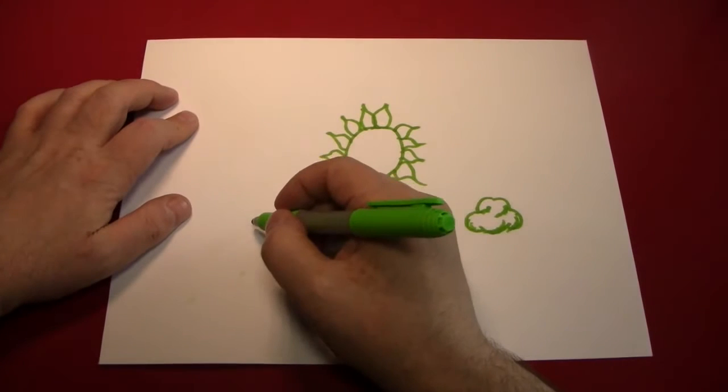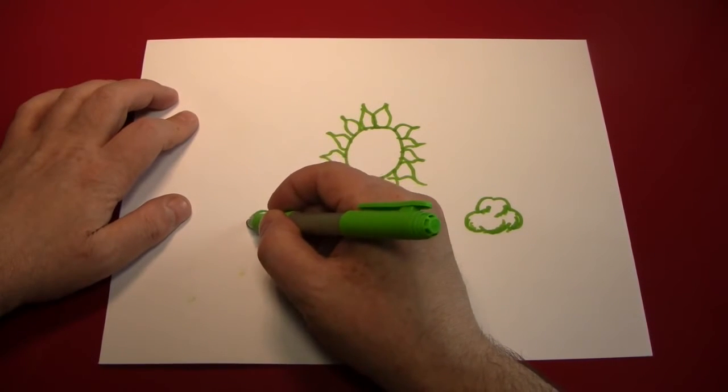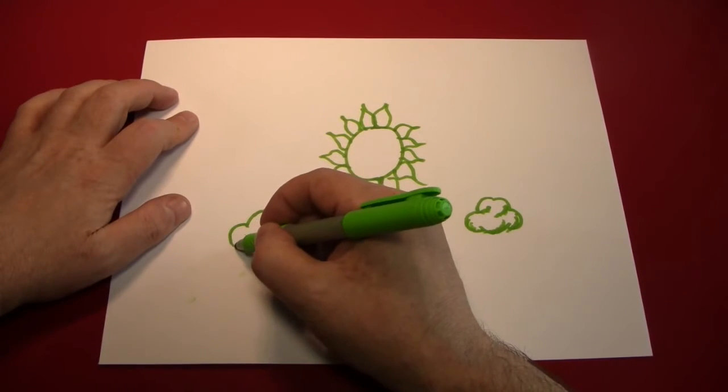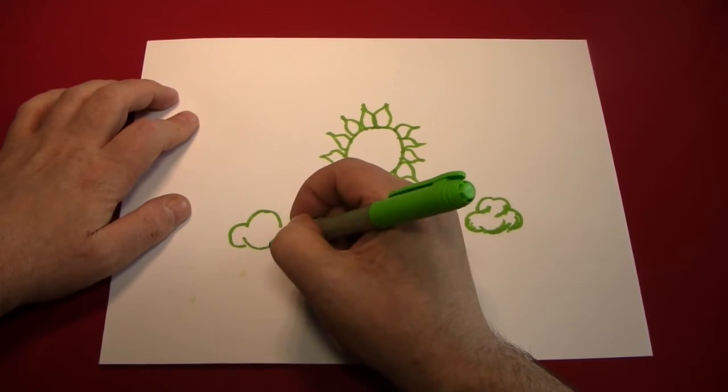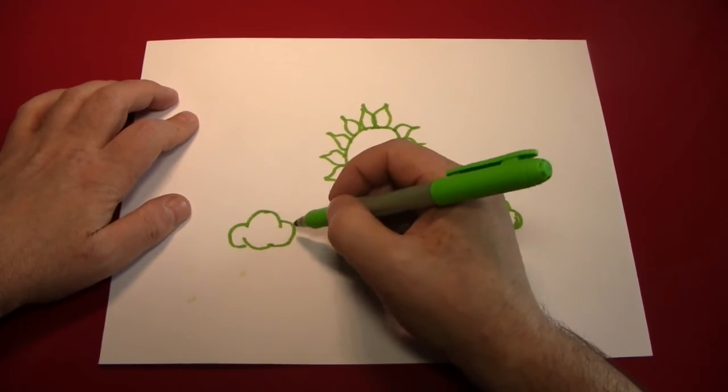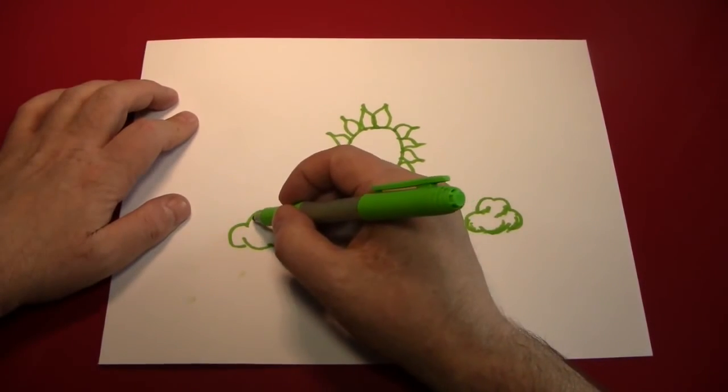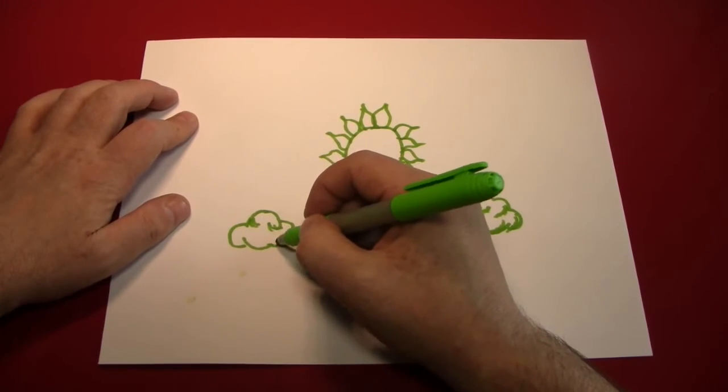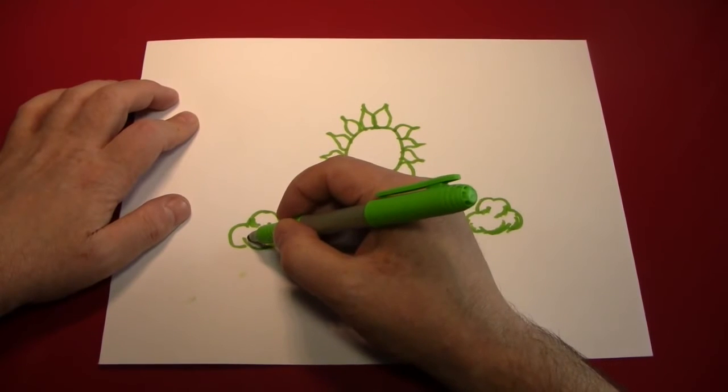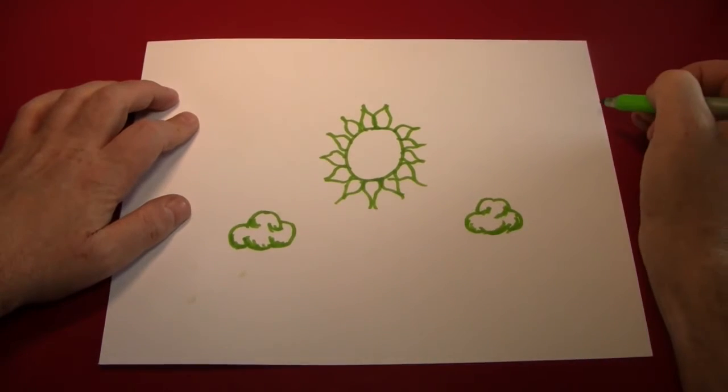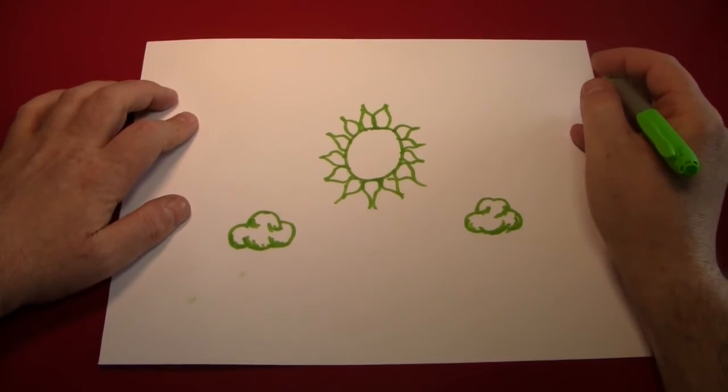And maybe I'll put another cloud right here. And just quickly, these clouds are made by creating curves in a cloud shape, and then just giving it a little bit of depth with some shadowing. Easy peasy. I'm not going to draw any treesies.